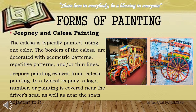Jeepney and Kalesa painting. The Kalesa is typically painted using one color. The borders of the Kalesa are decorated with geometric patterns, repetitive patterns, or thin lines. While jeepney painting evolved from Kalesa painting, in a typical jeepney, a large number of paintings are placed near the driver's seat as well as near the seats adjacent to it.